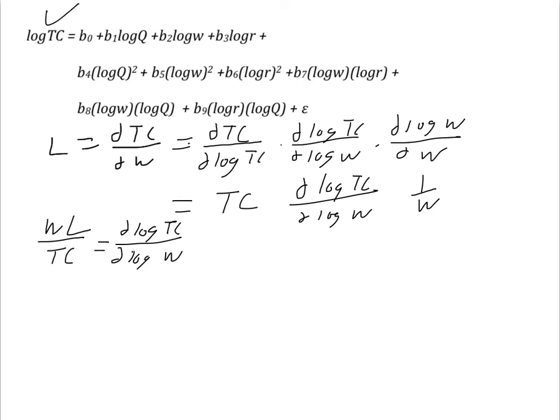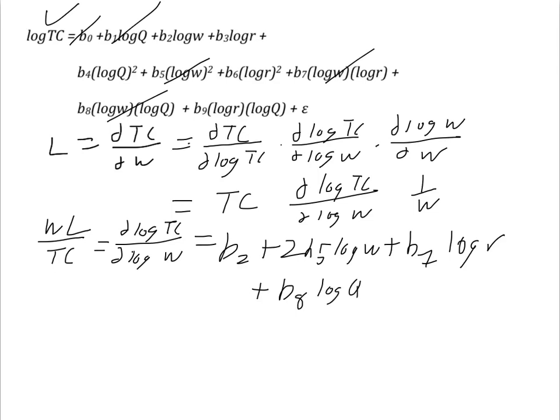Now what I'm doing is taking the derivative of my translog cost function with respect to the log of W. And there's nothing in B0, so there's nothing in log Q. So I have B2 plus, the next term with a log W in it is 2B5 log W, plus B7 times log R plus B8 log Q. And there's no log W here. And then I have to add an error term if I'm going to estimate this econometrically.